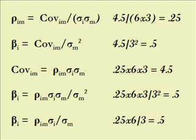And the computation of the variance of the market is 9, the 3 squared covariance, 4 and 1 half, we get 1 half for the beta. And we can also use the other version,